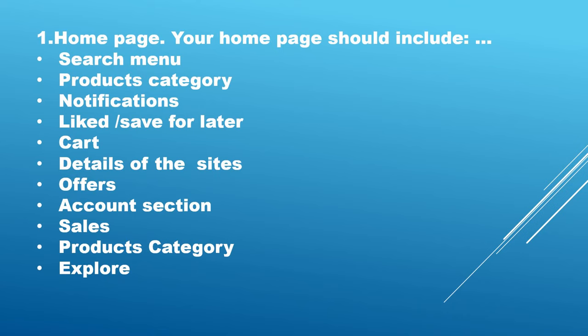Now the home page — if somebody asks you to describe all the scenarios for the home page, or what functionality to check, the home page should include: search menu, product categories, notifications, liked or save-for-later, cart details, site offers, account section, sales, product category, and explore. If you're a developer working on a TDD model, these are the things you should know to design your test cases. You should know prior to requirements that the home page has these many categories and items, create classes for them, and start coding once requirements arrive.